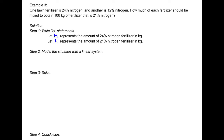According to the question, we want to make 100 kilograms of fertilizer, so H plus L equals 100. We also know the amount of nitrogen: 24% of H, written as 0.24H, plus 12% of L, written as 0.12L, must equal 21% of 100 kilograms of fertilizer total.